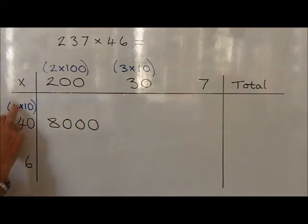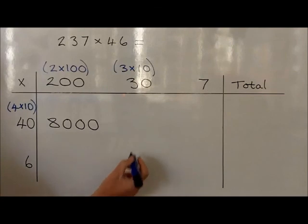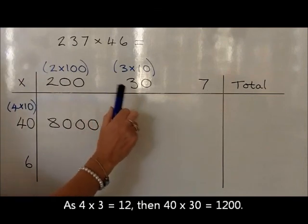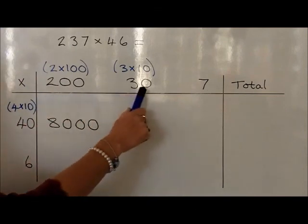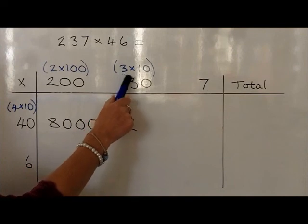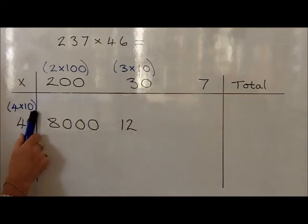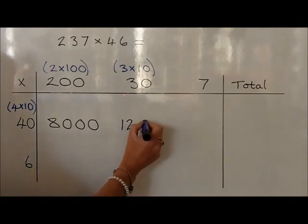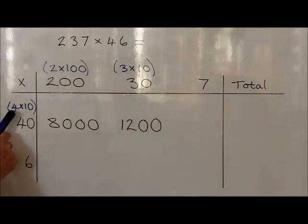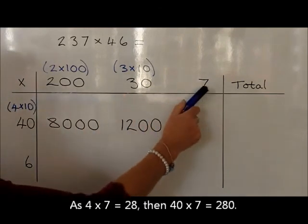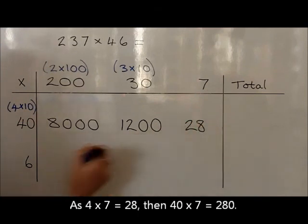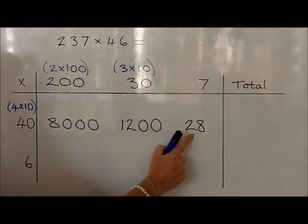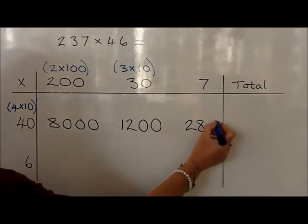We now look at 4 times 3 and write the answer down as 12. We're actually multiplying 40 times 30: 40 is 10 times bigger than 4, and 30 is 10 times bigger than 3. If you multiply by 10 and by 10 again, you're multiplying by 100, so the 12 is multiplied by 100, which becomes 1,200. We're now looking at 4 times 7, which is 28. But we actually need 40 times 7 — this is 10 times bigger than 4, so the 28 we make 10 times bigger, which is 280.